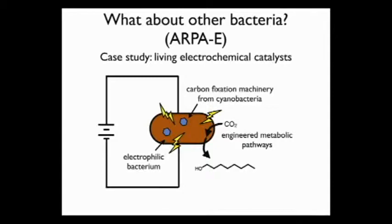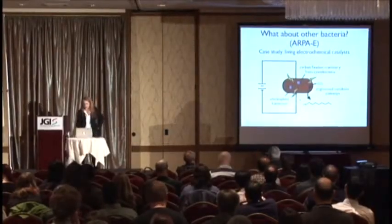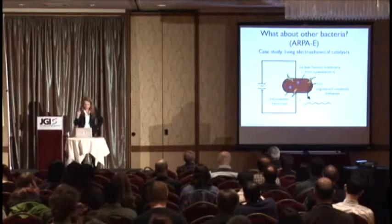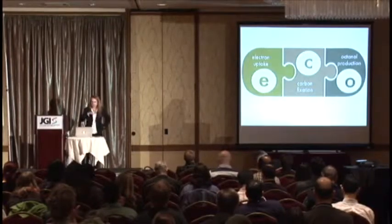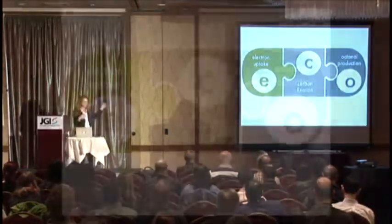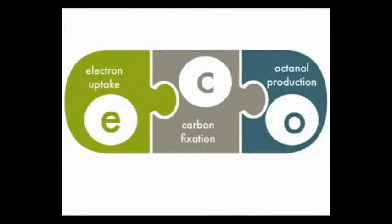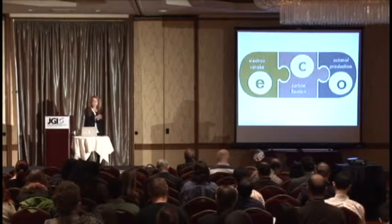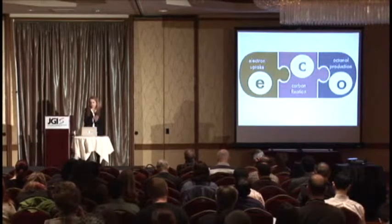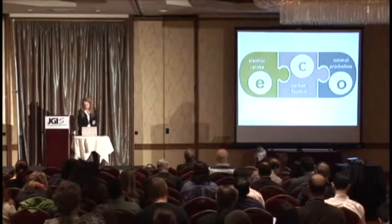The cells would have to fix carbon and, because it's funded by the DOE, they have to make a transportation-compatible fuel. My vision is to make this a universal chassis so they would make many things. The fuel we're making is octanol — we call the system ECO, for electron uptake, carbon fixation, and the fuel. We chose octanol because it is quite an ideal fuel; we are actually the only team not working on butanol, which is sort of interesting.